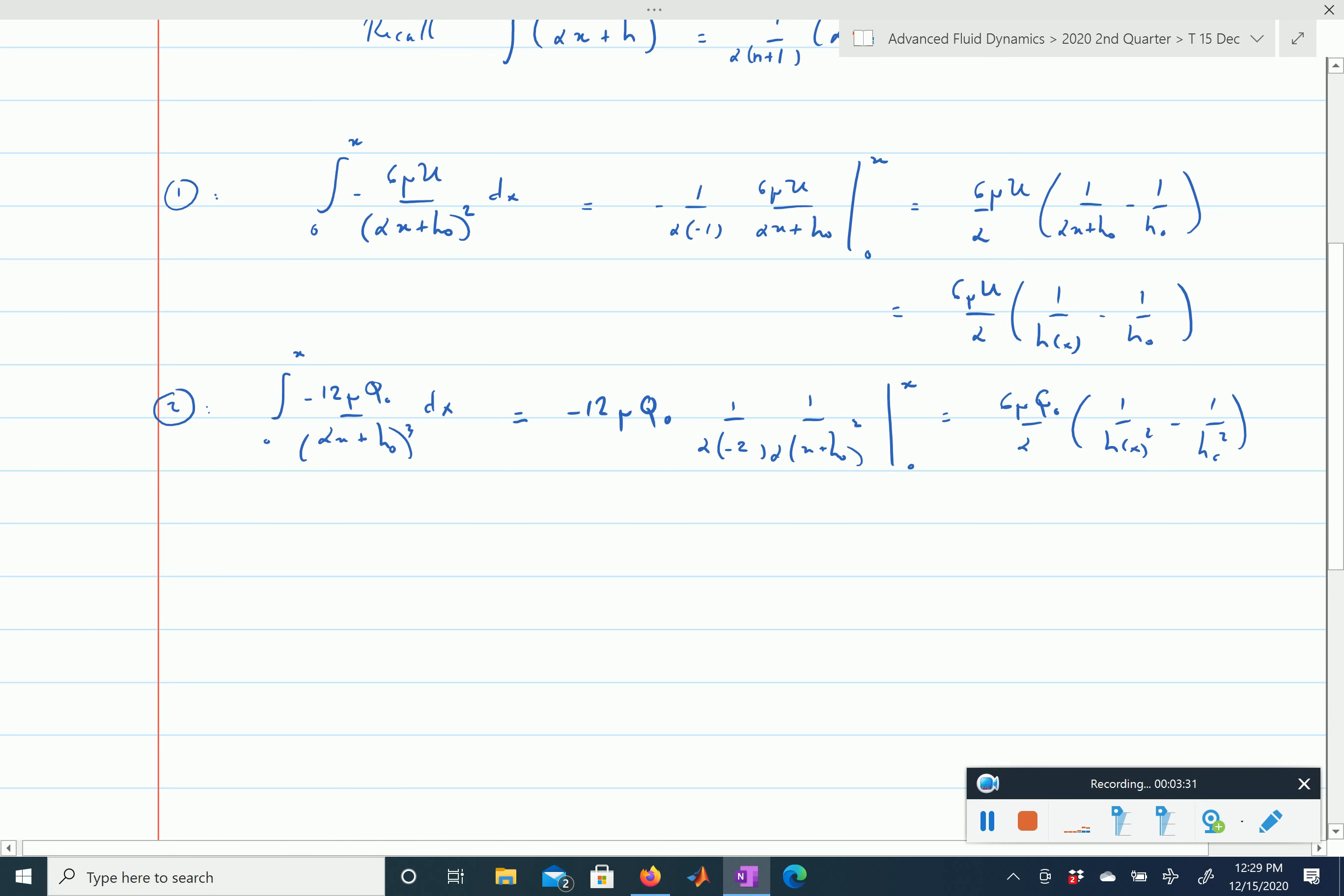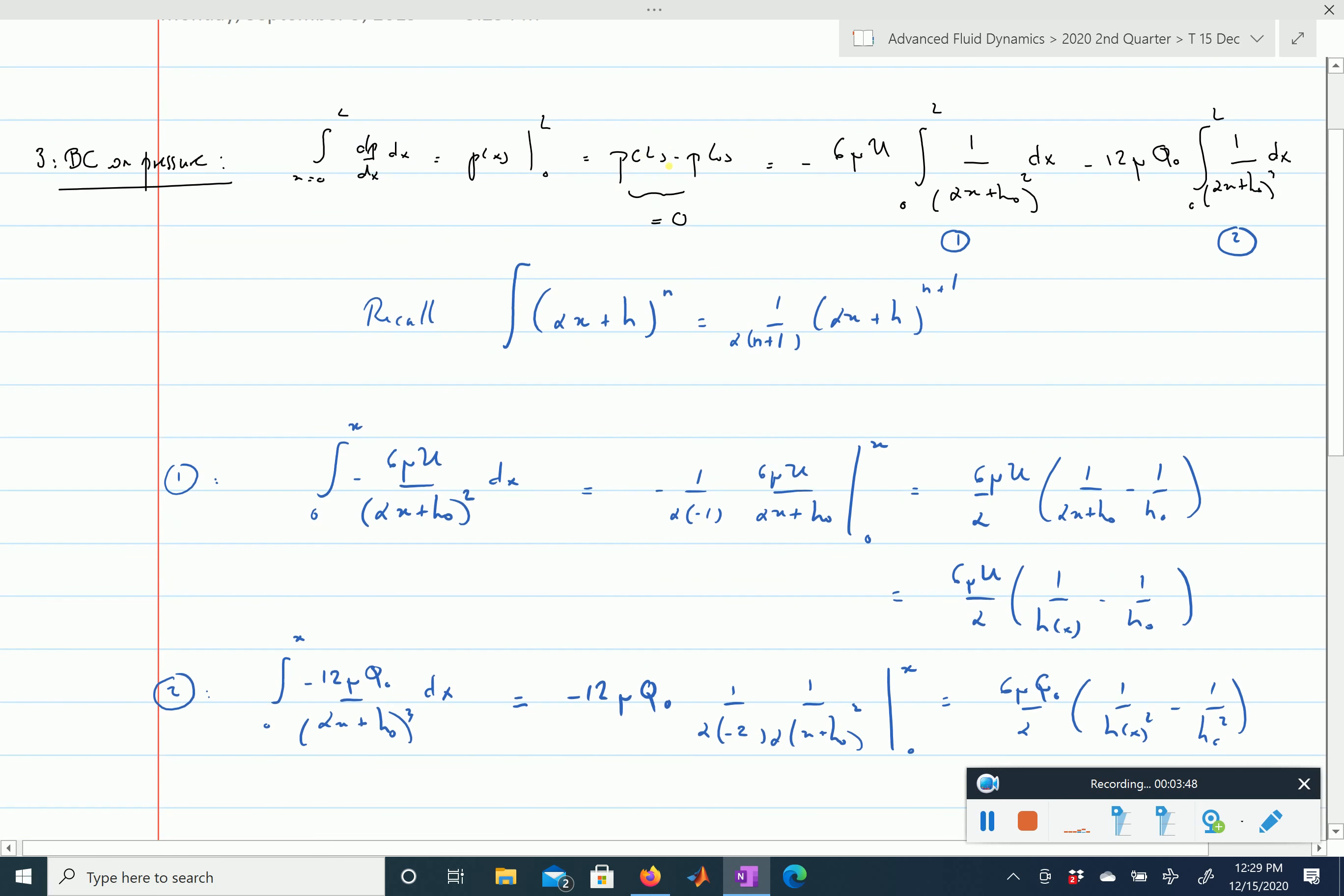Again here, when x equals to L, hx is going to be equal to alpha L times h0, which is h1, following our notations. So we have those two terms, and so the sum of these two terms is going to be equal to 0, right, this is because there is no, again, no change of pressure between 0,